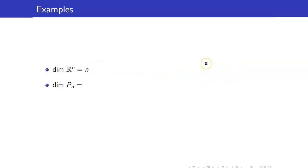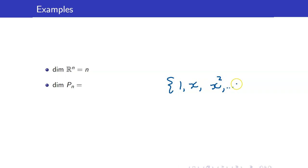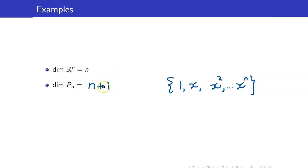What about the dimension of P_n? We already know a standard basis for P_n, and that is the set {1, x, x², ..., x^n}. Therefore, the dimension of P_n is equal to n plus 1. You have n plus 1 elements. So do not forget — P_n has dimension n plus 1.